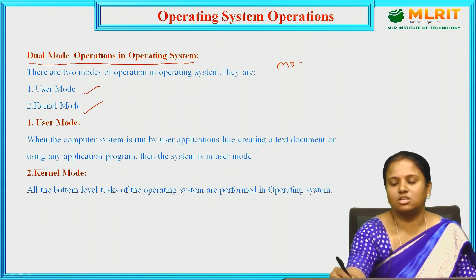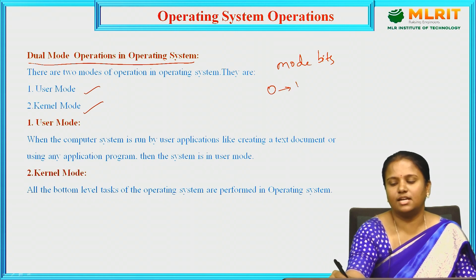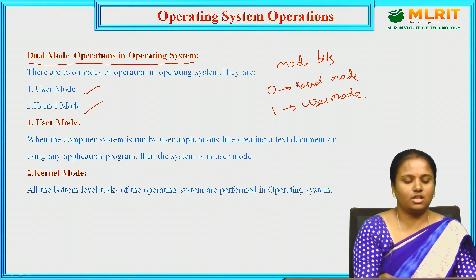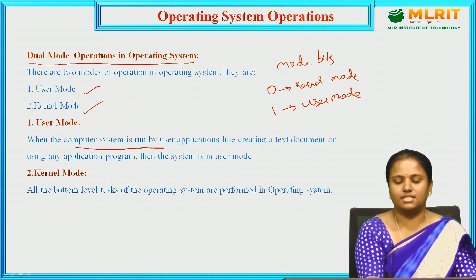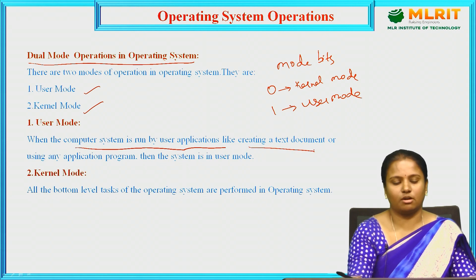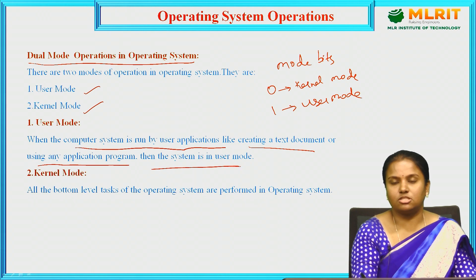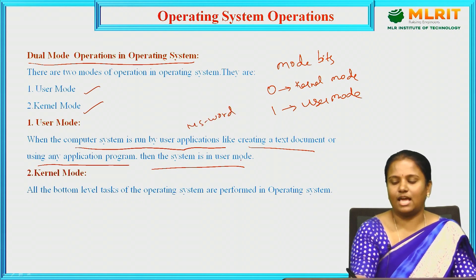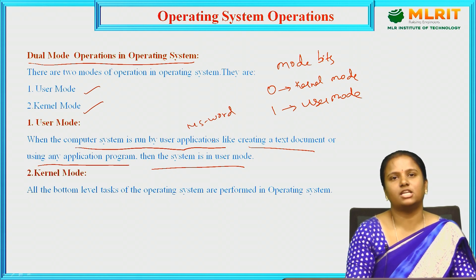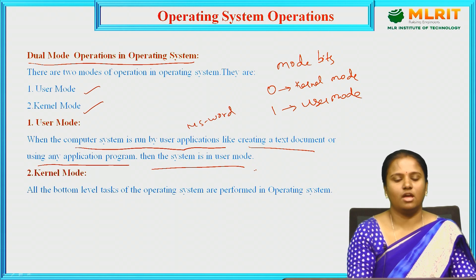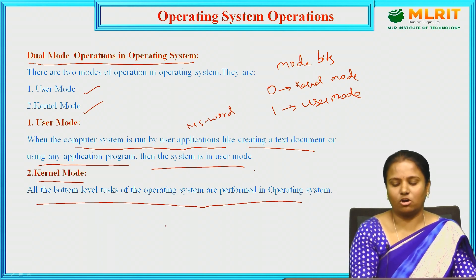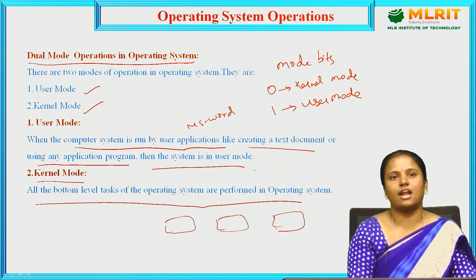We have a mode bit in memory: when it is 0, the system is in kernel mode; when it is 1, it is in user mode. In user mode, when the computer is run by a user application — like creating a text document or using MS Word — the system is in user mode. In kernel mode, all bottom-level tasks of the operating system are performed.